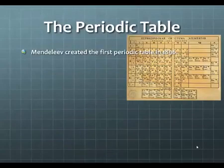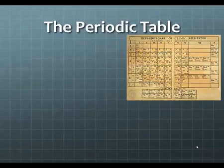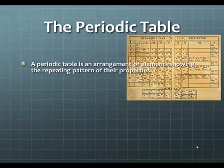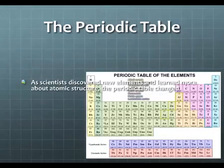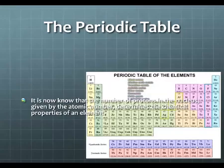It's a periodic table. Mendeleev created the very first one. The periodic table is an arrangement of elements showing the repeating pattern of their properties. As scientists have discovered new elements and learned more about atomic structure, the periodic table has slowly developed and changed into what it is today. It is now known that the number of protons in the nucleus, given by the atomic number, determines the chemical properties of an element.